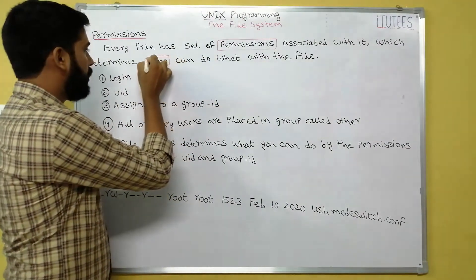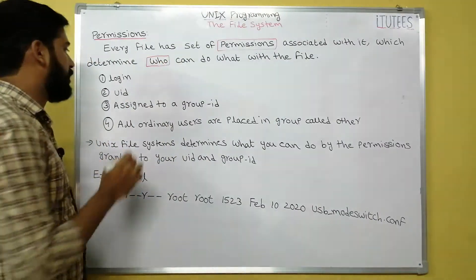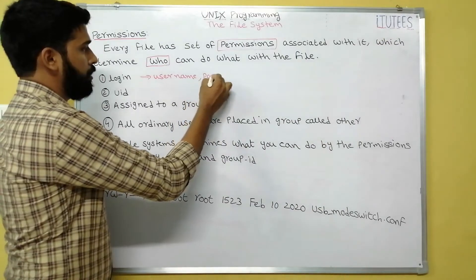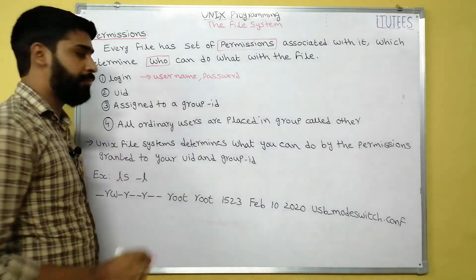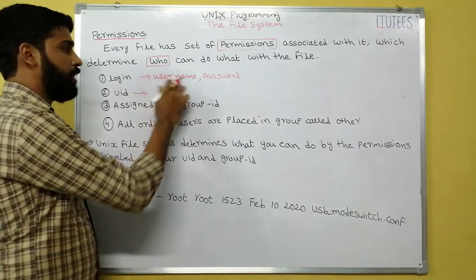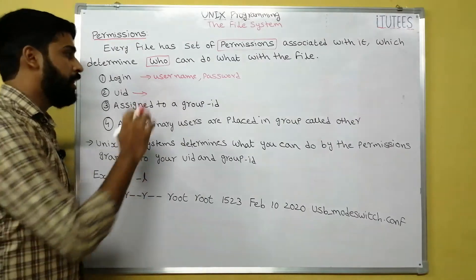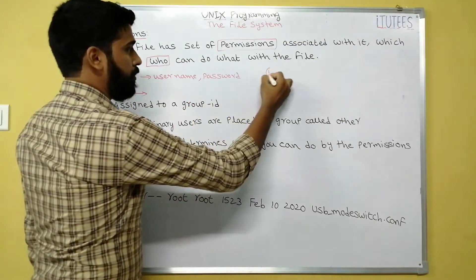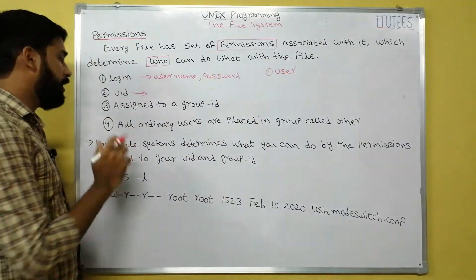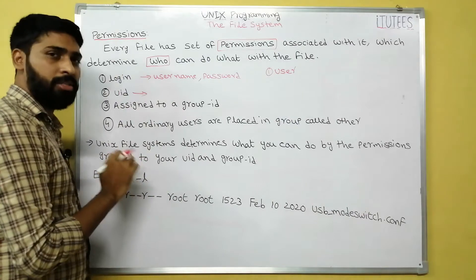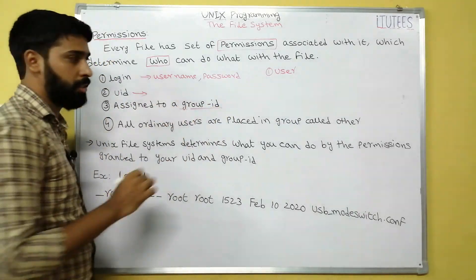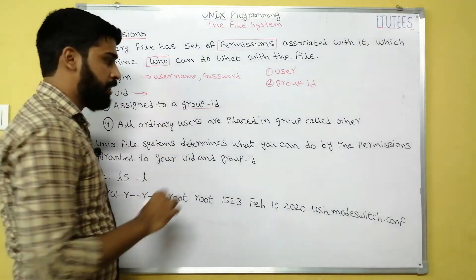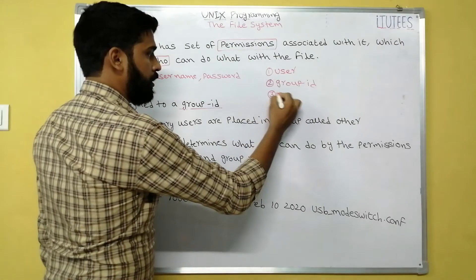When we say 'who', there are three types of users. When you log in with your username and password, the Unix system identifies your user ID. That is the first type: the user. The second one is the group ID — when you log in, you are assigned to one group ID. All the ordinary users are placed in a group called 'others', which is the third type.